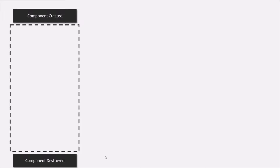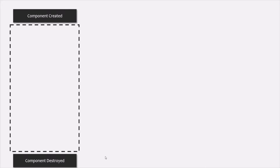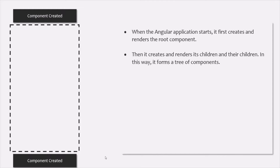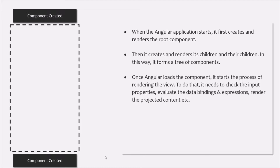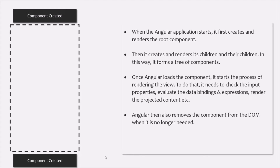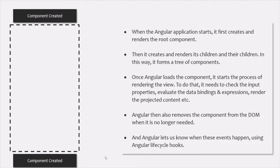Once a new component class is instantiated, and before the component is destroyed, it goes through different phases in the creation process. When the Angular application starts, it first creates and renders the root component — the app component — then creates and renders its children and their children, forming a tree of components. Once Angular loads the component, it starts rendering the view: it checks input properties, evaluates data bindings and expressions, renders and projects content if required, and also removes the component from the DOM if it is no longer needed.